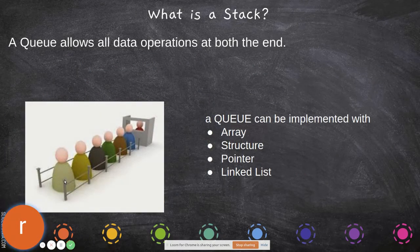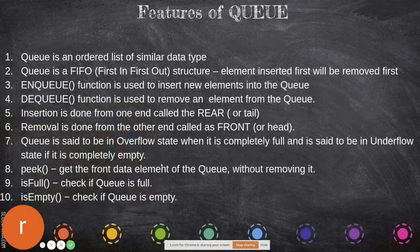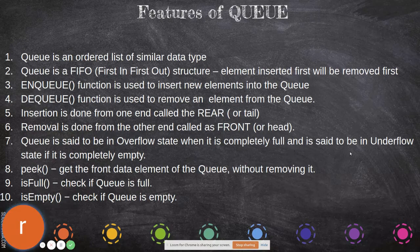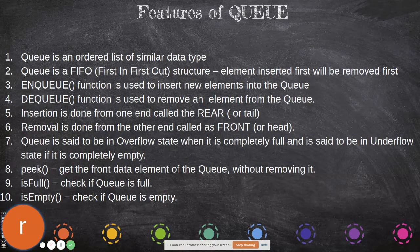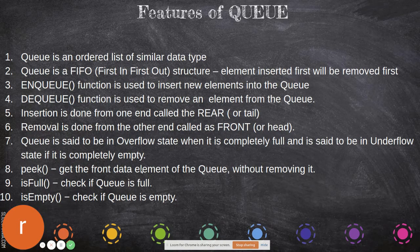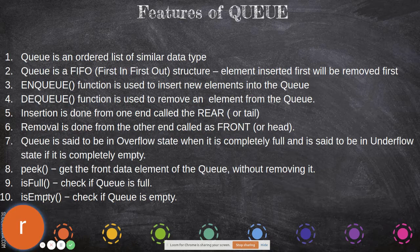Queue is said to be in overflow state when it is completely full, and in underflow state if it is completely empty. Peek is reading the front element without removing it. We have isFull and isEmpty to check whether the queue is empty or full.